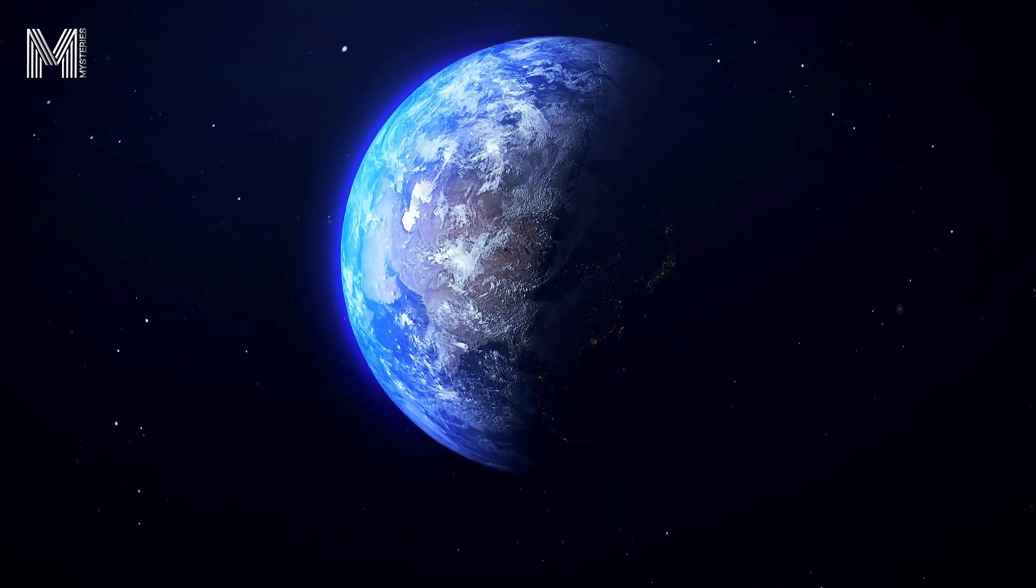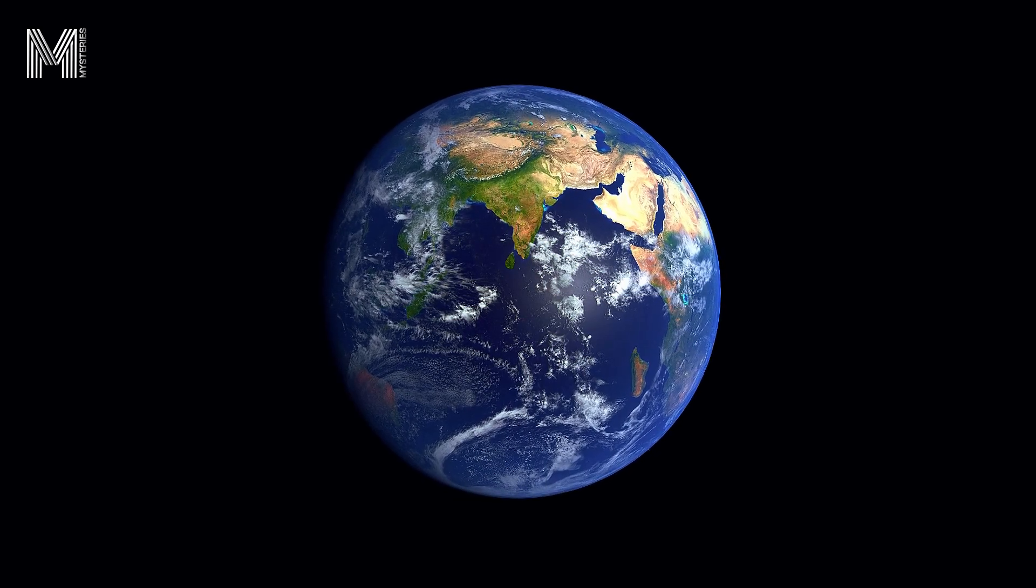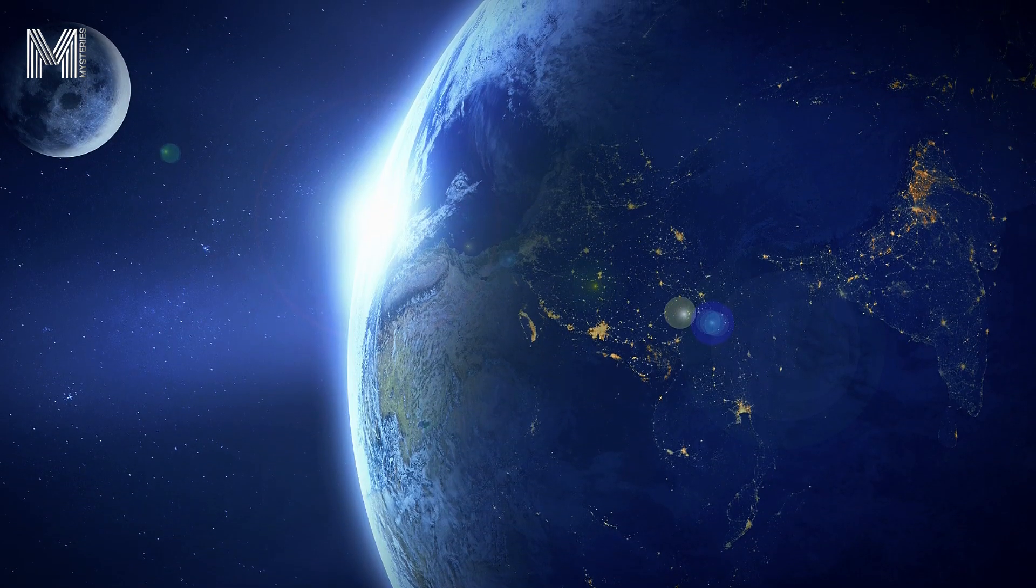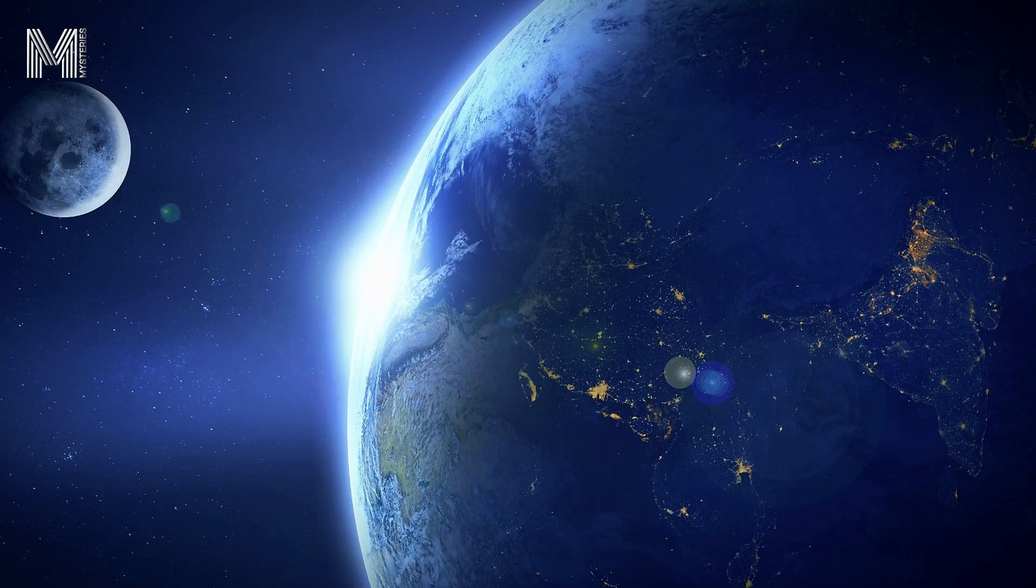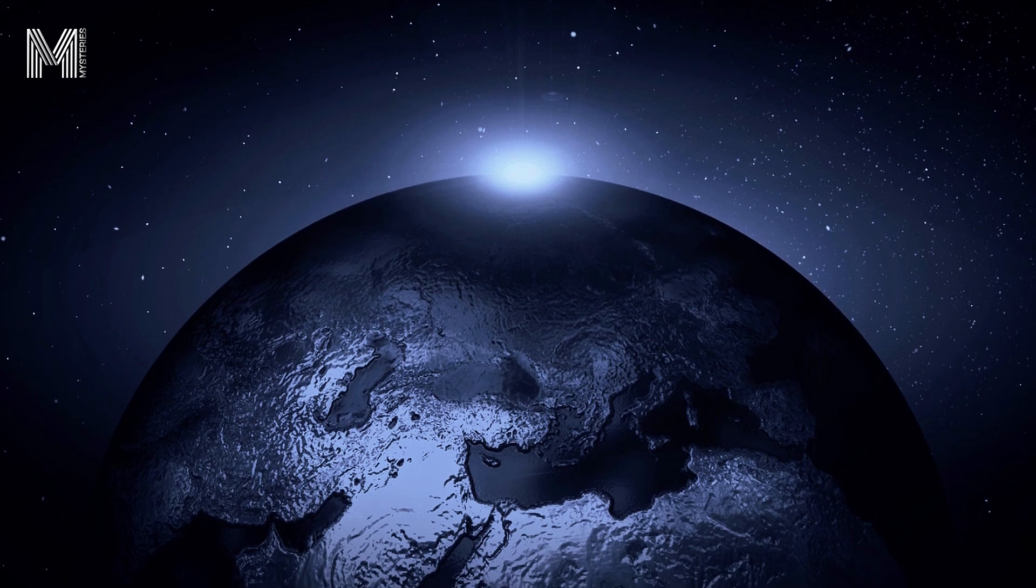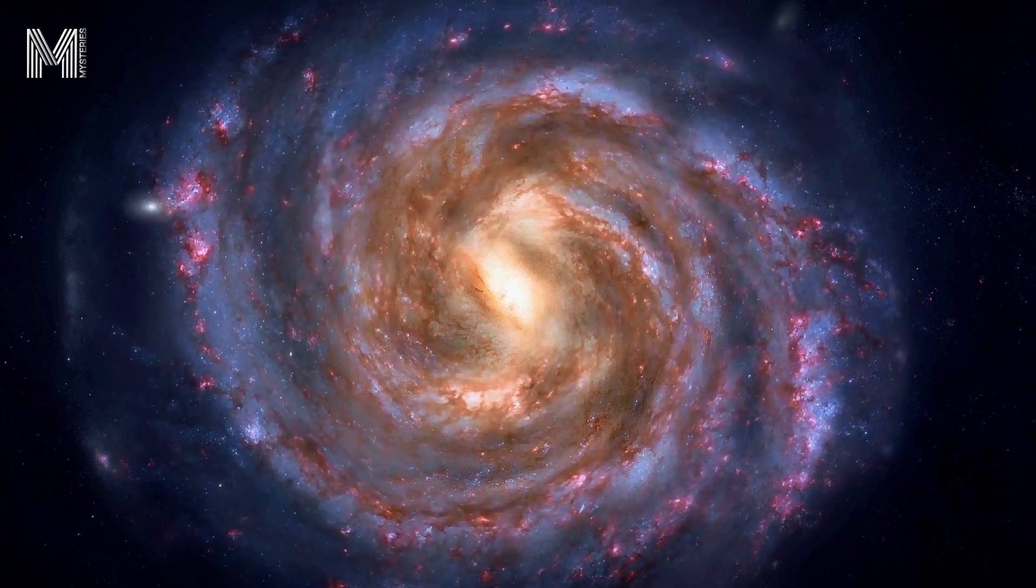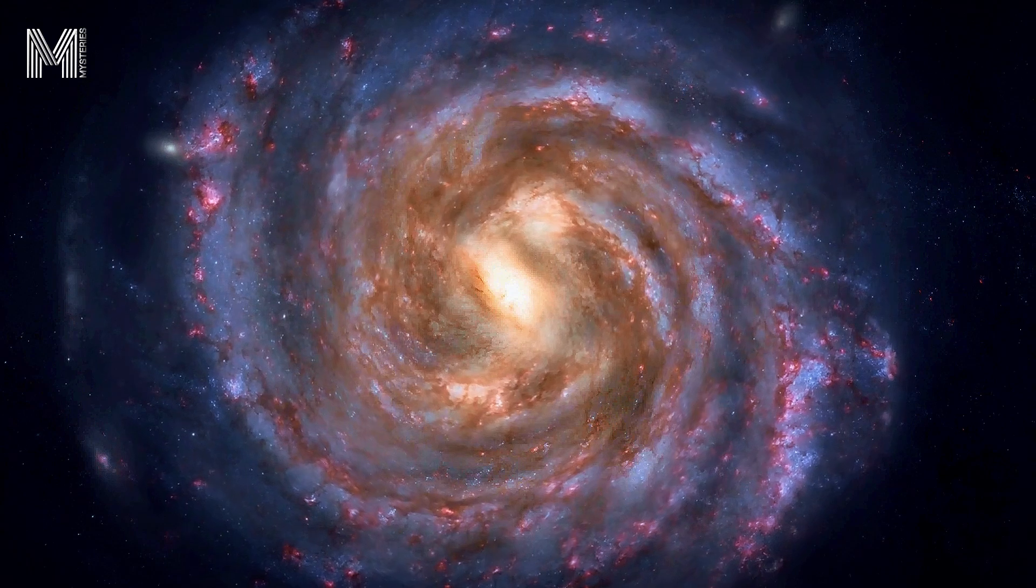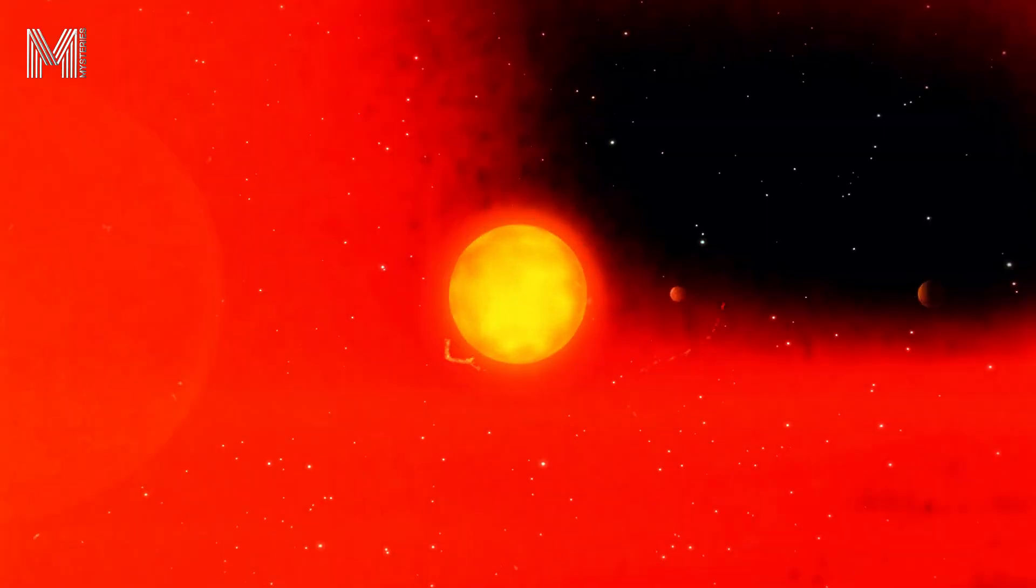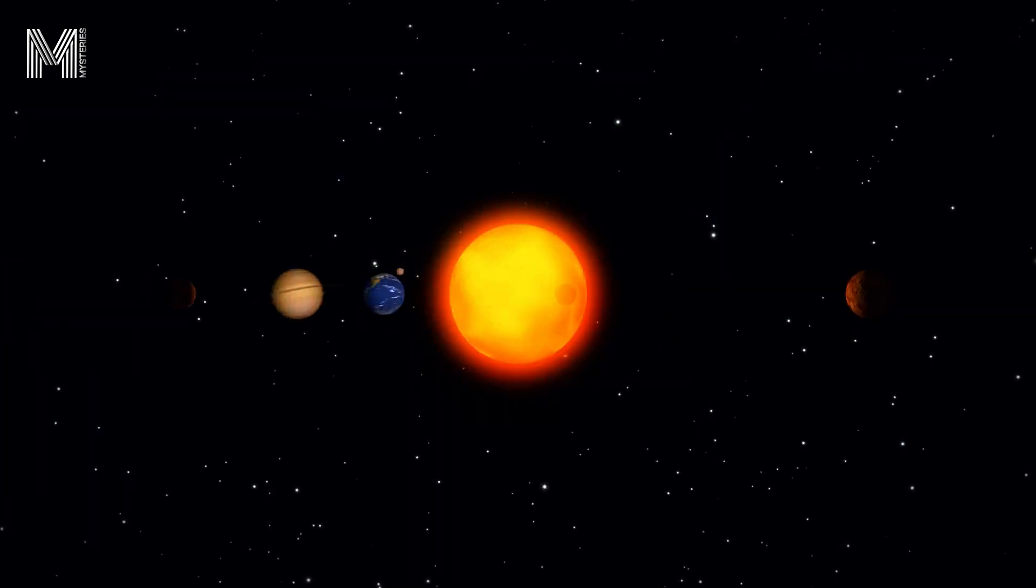The young earth theory is a belief that asserts that our planet was created by God in a relatively short period, between 6,000 and 10,000 years ago. This idea contrasts with the widely accepted scientific view, which states that the earth formed about 4.5 billion years ago through slow and gradual geological processes. To better understand the young earth theory, it is important to consider its roots in religious tradition and how it has developed over time.